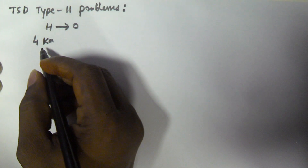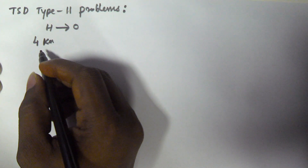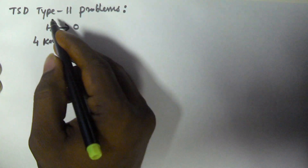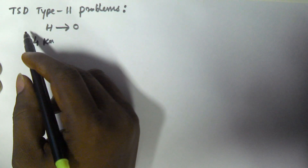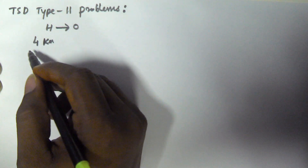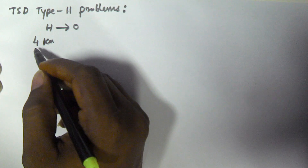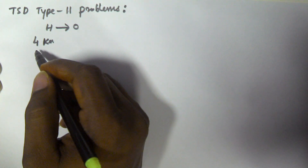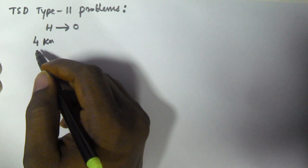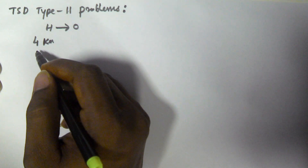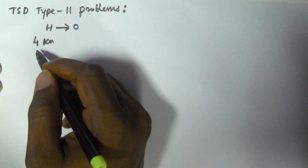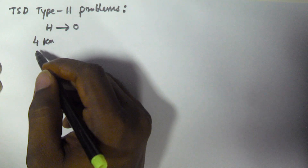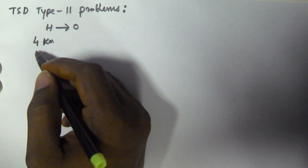Hello friends! In this video we will see the type 2 problems of time speed distance. In the previous video we saw a person travelling from his home to office who reaches early on the first day and late on the second day, and we had to find the distance between his home and office.